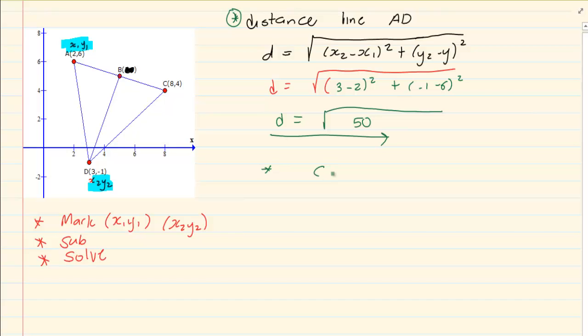The next thing is calculate the midpoint of AC. The formula for midpoint is x1 plus x2 over 2 is equal to the x of the midpoint and y1 plus y2 over 2 is equal to the y of the midpoint. Since we already have an x1, y1 there, what we do is we mark this as x2, y2. Then we are going to substitute.